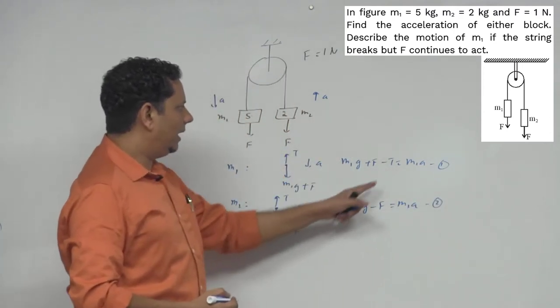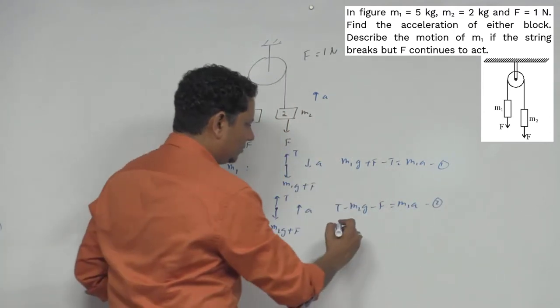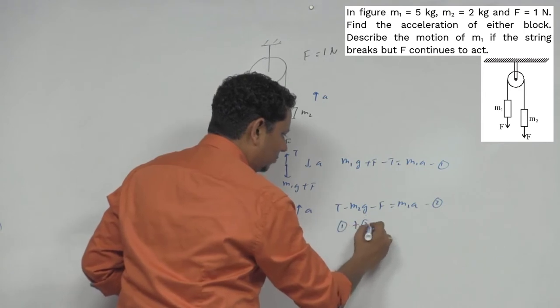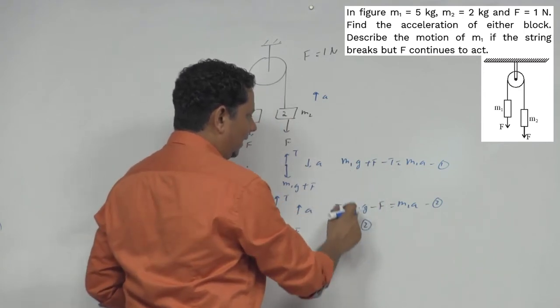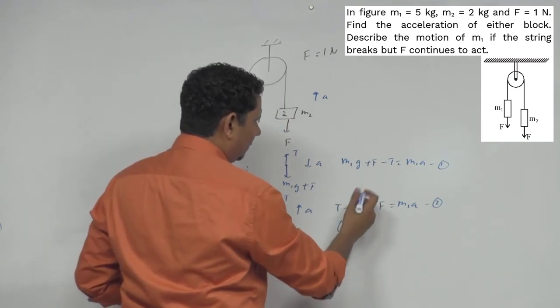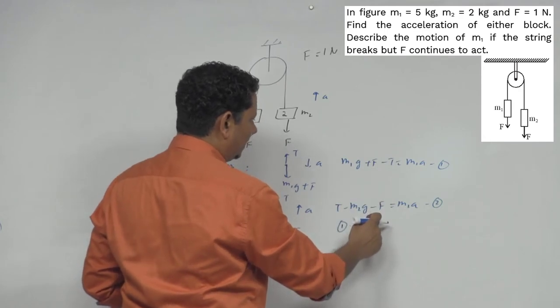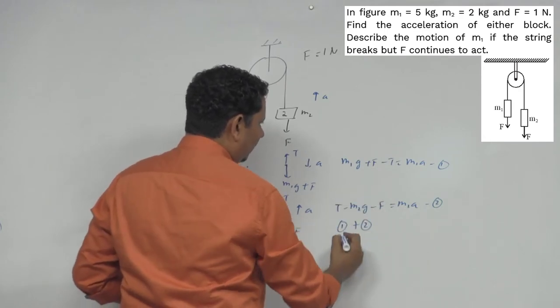Now if we add both of these, your T will get canceled. So we are saying equation 1 plus 2, if we add both, then T will be out. On left hand side will remain, and in fact F will also cancel here. So left hand side will remain...